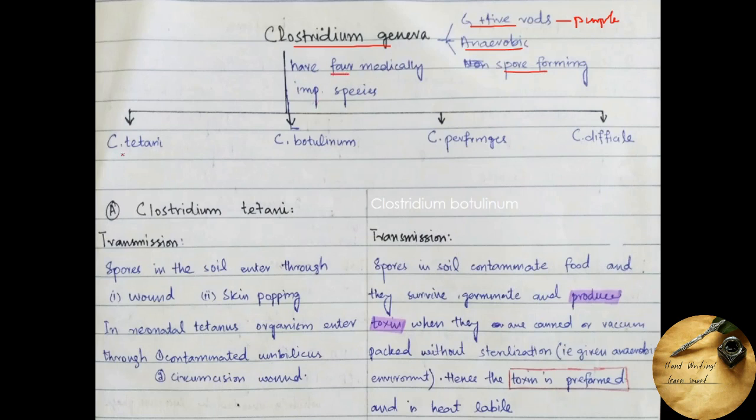Clostridium genera have four medically important species which are Clostridium tetani, Clostridium botulinum, Clostridium perfringens, and Clostridium difficile. In this lecture we will study only about Clostridium tetani and Clostridium botulinum. As these two species are medically related in transmission and pathogenesis, we will discuss them side by side so it may be easy to remember.